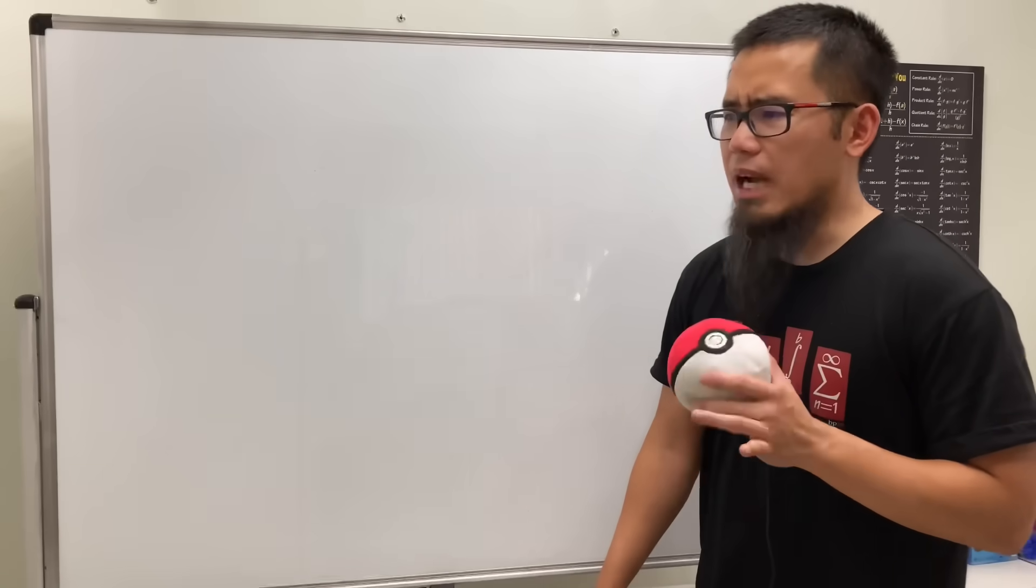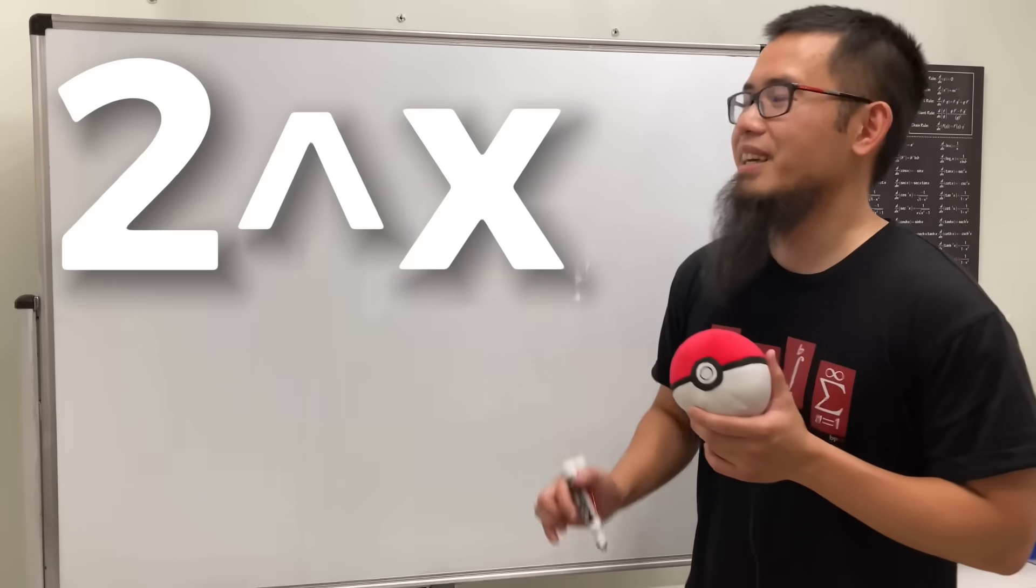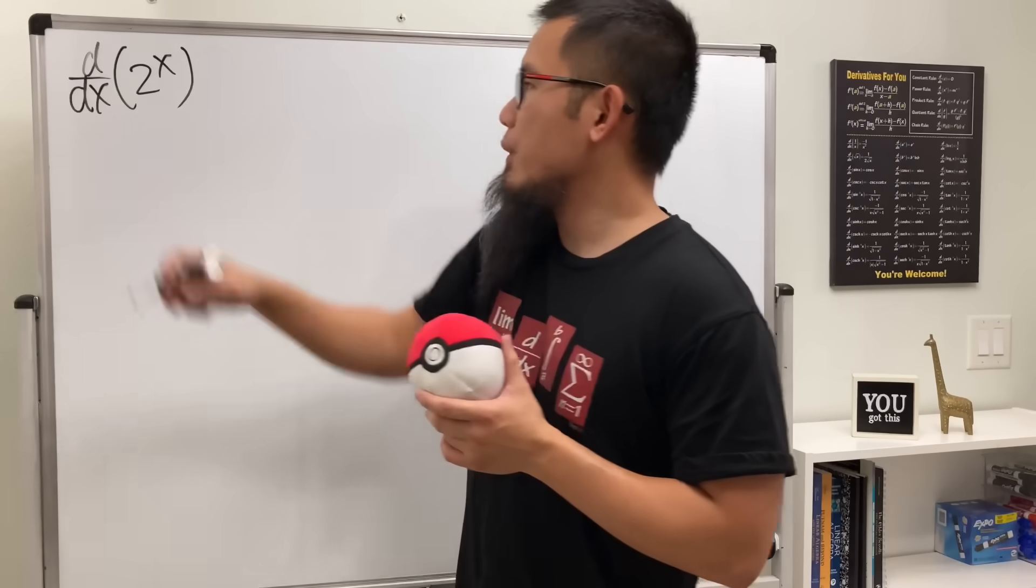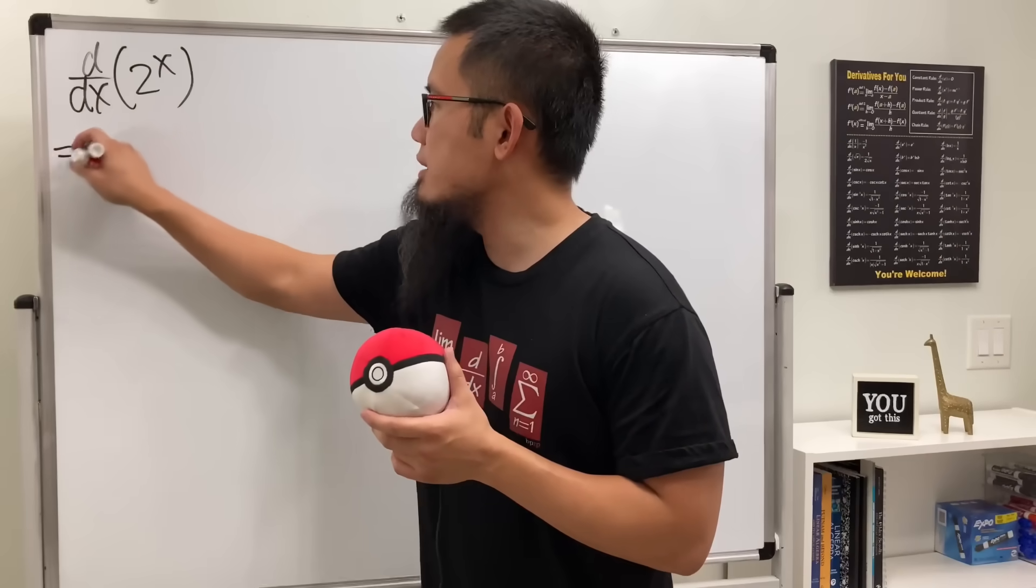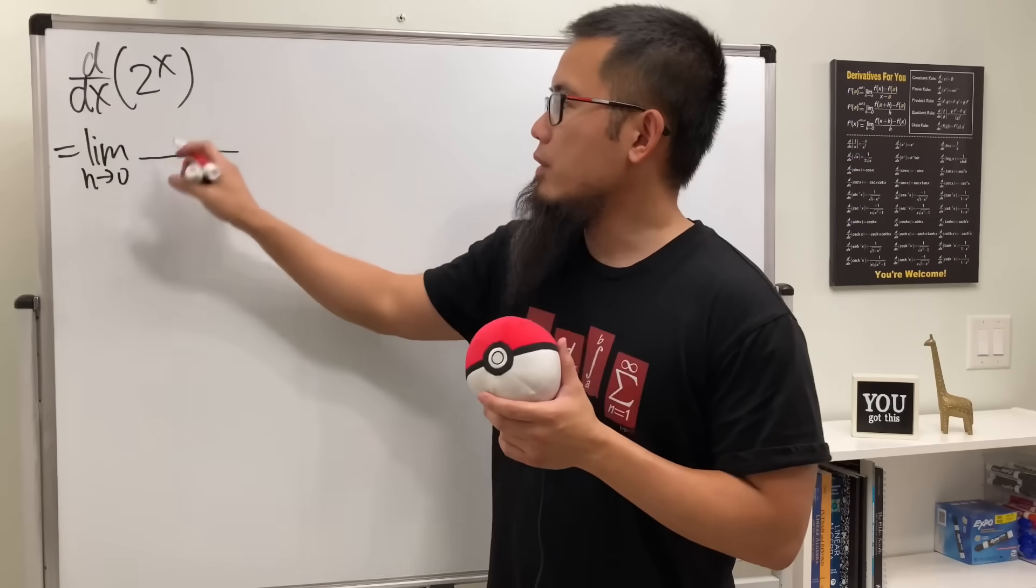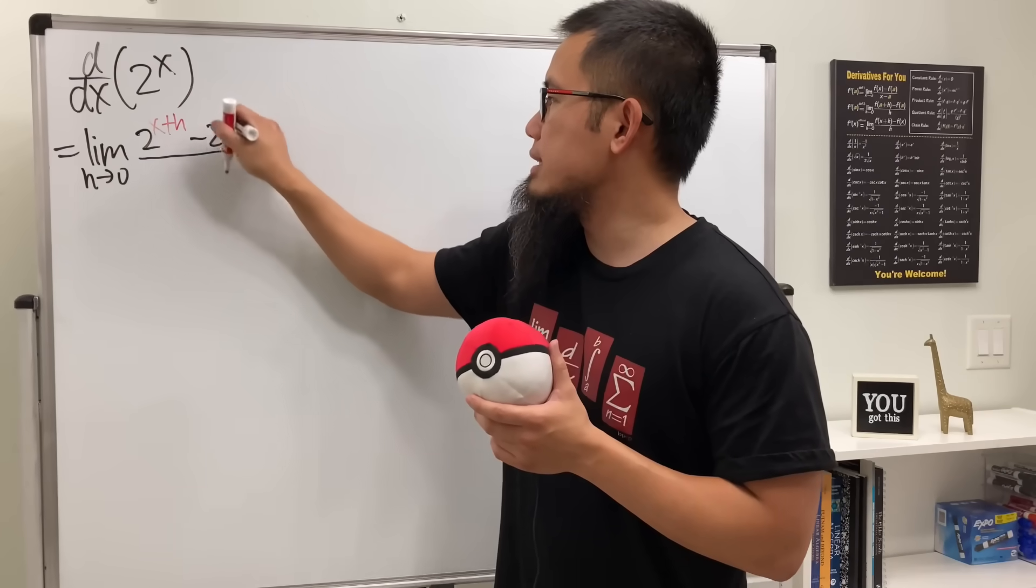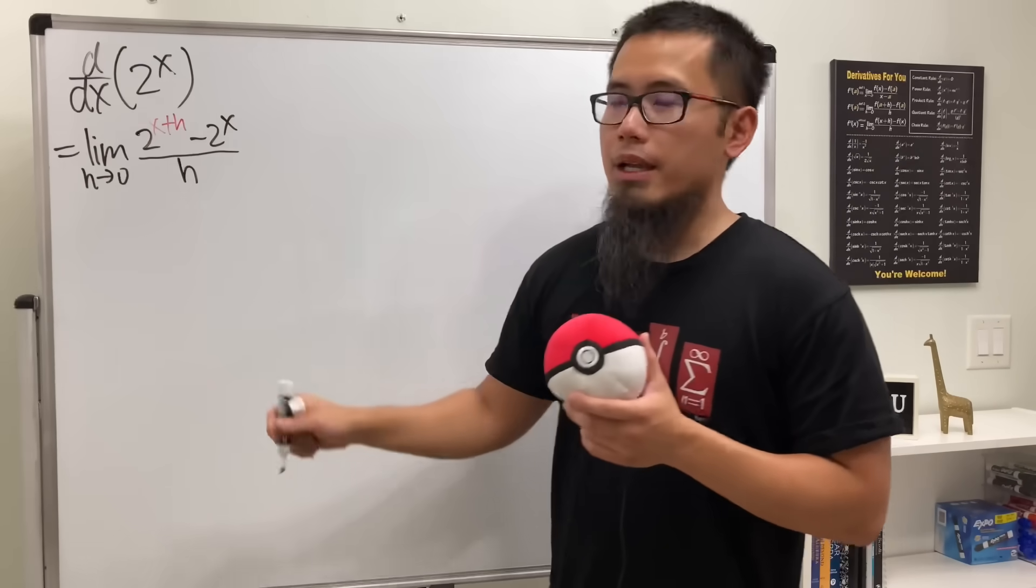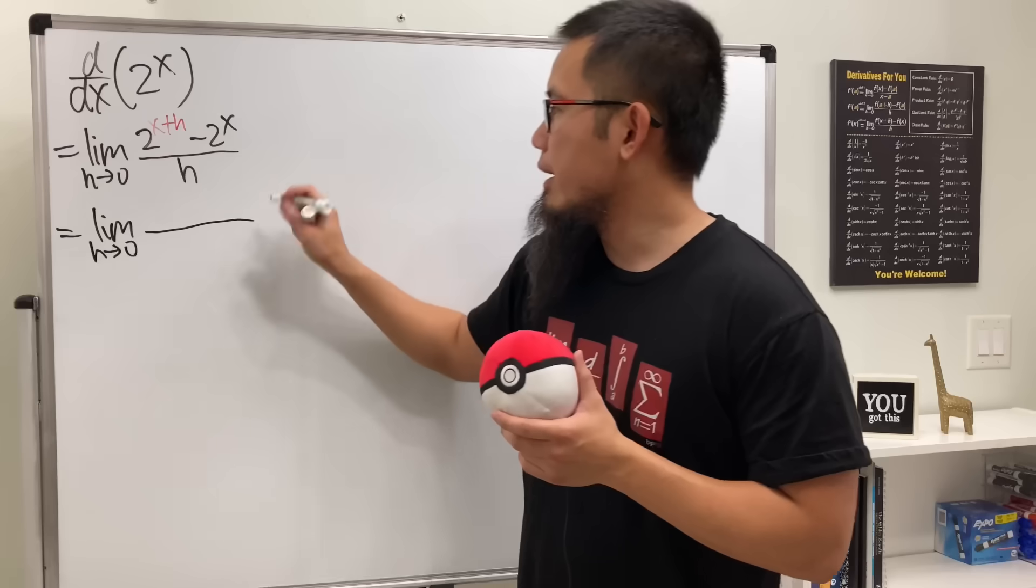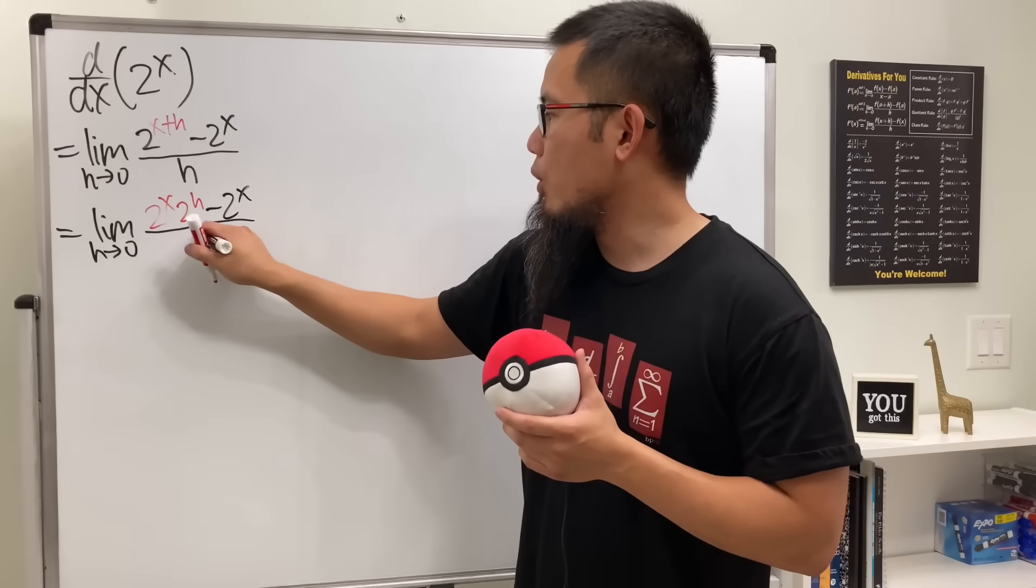But we don't know what e is yet, right? So let's make some observations with some easier exponential functions. Let's talk about 2 to the x first. Let's take a look at the derivative of 2 to the x. We can use the definition of derivative. So this will give us the limit as h going to 0. We will plug in x plus h, so we get 2 to the x plus h minus 2 to the x over h. And notice that this power can break apart. So this is 2 to the x times 2 to the h minus 2 to the x all over h.